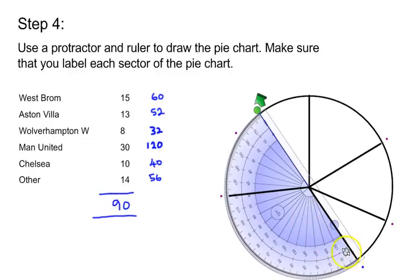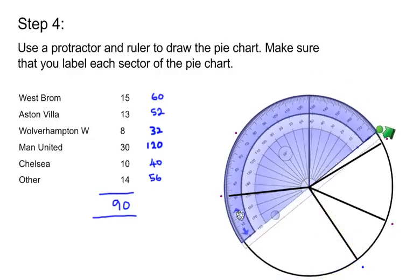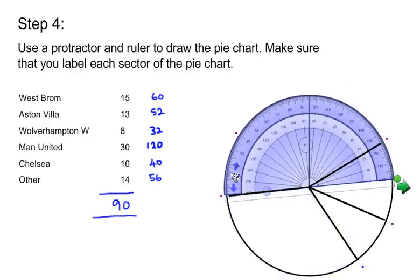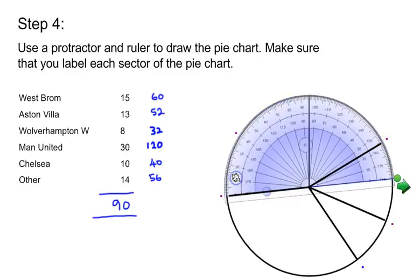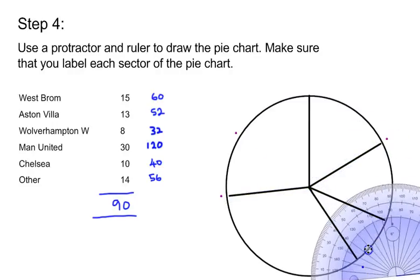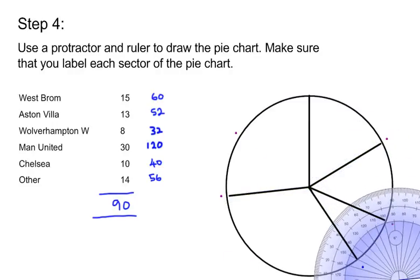This mark is 40 degrees. I shouldn't have to measure the final one because if all my measurements are correct, then the final one should just take care of itself because it's all that's left. So draw from the center of the circle to the most recent mark. There we go. Now we've finished with the protractor.